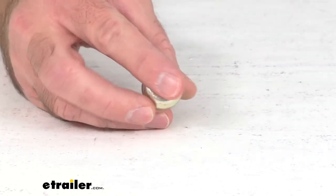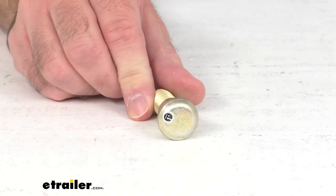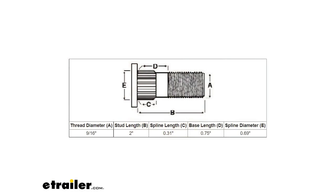To further help you determine if this is going to work for you, on your screen I am including a diagram with some additional measurements. You see the thread diameter is listed at nine-sixteenths of an inch, the stud length is two inches, and then some further dimensions.